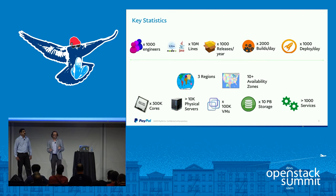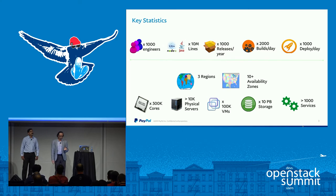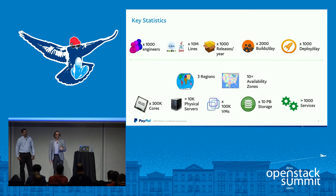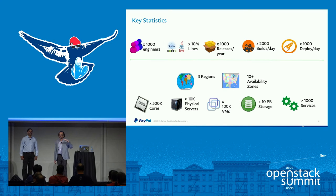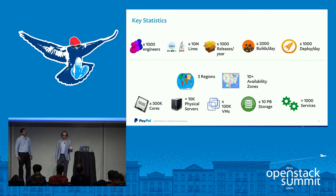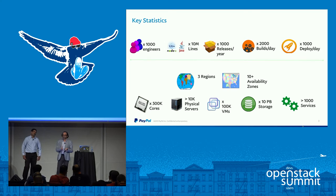Within those three regions and availability zones, we have close to 500K cores deployed, 10,000-plus physical servers, 100K-plus VMs — closer to 150K the last time I checked. Close to 10 petabytes of storage. We have somewhere around 2,000 to 3,000 PayPal applications all running in our private cloud. Our web tier and mid-tier applications are practically all running in our OpenStack cloud. The data tier is still outside of cloud, but we are looking to start moving our Kafka, Elasticsearch, and NoSQL databases into the cloud starting in 2017.